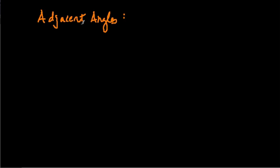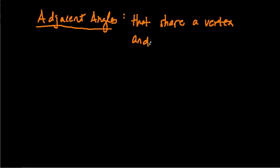So let's start by defining what an adjacent angle is, or what they are, I should say. They are angles that share a vertex and a common side.